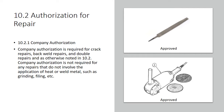Authorization for Repair. Company authorization is required for crack repairs, back weld repairs, and double repairs. Company authorization is not required for any repairs that do not involve the application of heat or weld metal, such as grinding, filing, etc. So if you can grind it out and get it to pass, you don't need authorization. But if you're going to weld on it or use heat, the company needs to know — you need company authorization before you proceed.